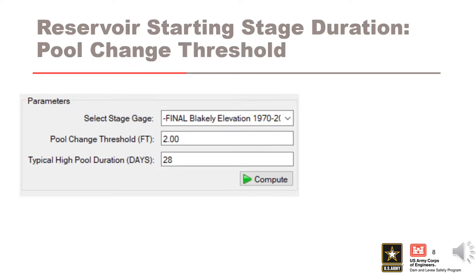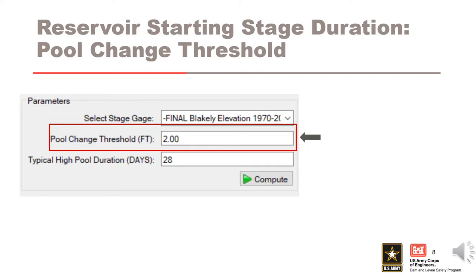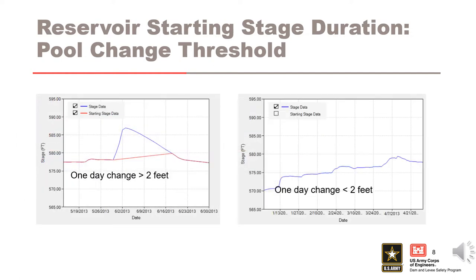Pool change threshold represents the maximum rate of rise per day. Pool changes that exceed this threshold are identified as flood events and the stage data is excluded from the analysis. This allows the starting pool elevation to be populated from daily elevations excluding flood events where the pool rises faster than the threshold. To estimate this threshold, examine a year of stages representing a typical year. Inspect the period of record, choose a year, and inspect the stage hydrographs from that year. You can then estimate a typical rate of pool change per day associated with flood and non-flood events. It may be beneficial to review several years before selecting a threshold value. This can be done by visual inspection in RFA and using Excel or a similar tool to calculate the daily change in stage. Note that setting the pool change threshold to zero will result in no filtered stage data, and the stage duration curves will be constructed using all the data from the stage gauge.